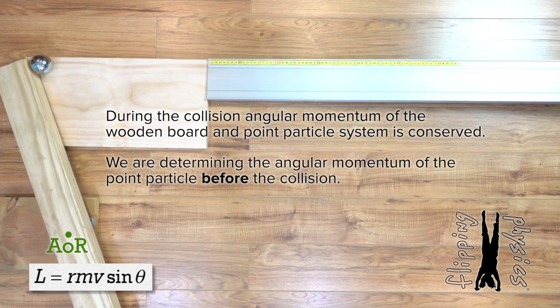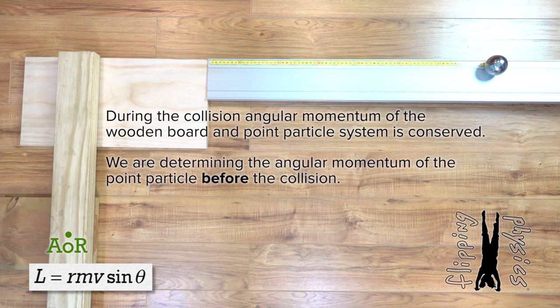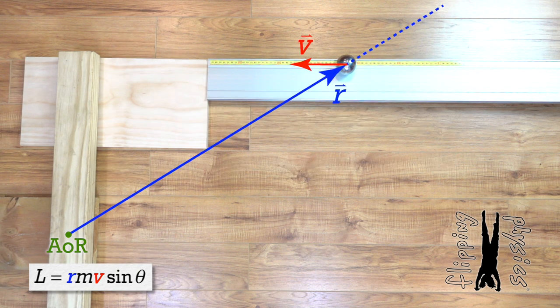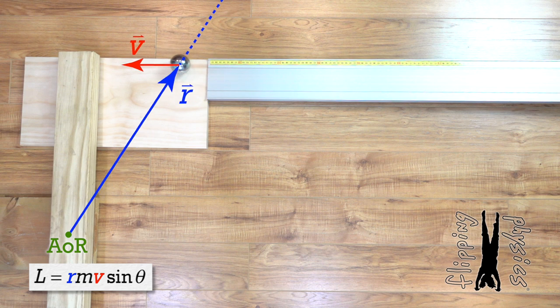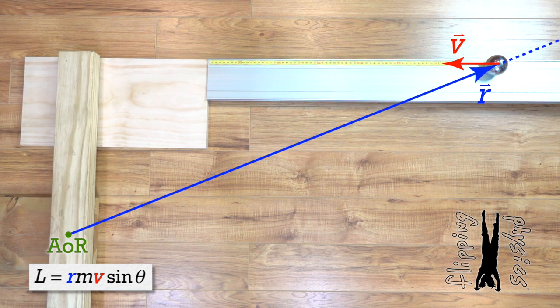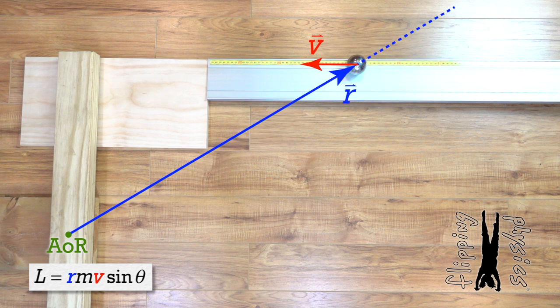First off, we are going to assume the point particle is moving at a constant linear velocity. So that is the v in the angular momentum equation. The r vector goes from the axis of rotation to the center of mass of the point particle. Please notice the magnitude and direction of the r vector change as a function of position of the point particle.